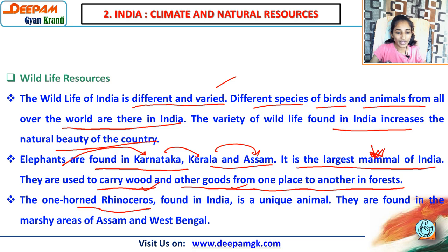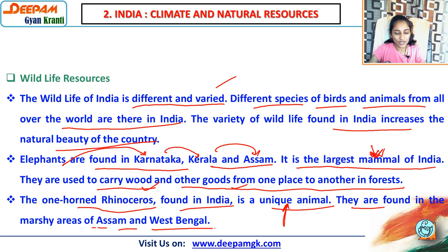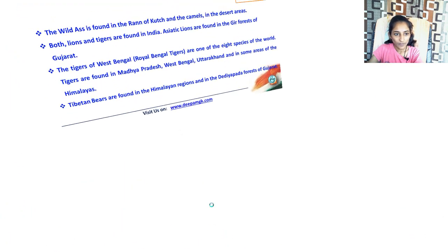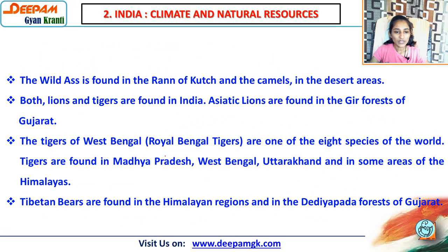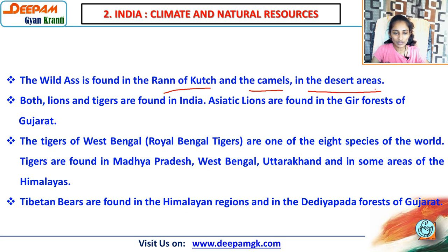The one-horned rhinoceros found in India is a unique and very different animal. They are found in marshy areas of Assam and West Bengal. The wild ass is found in the Rann of Kutch, and camels are found in desert areas. Both lions and tigers are found in India. Asiatic lions are found only in the Gir forest of Gujarat — safaris are even available there.